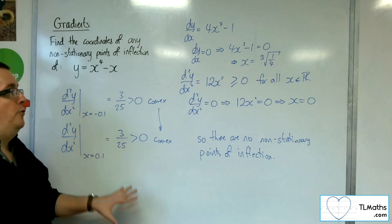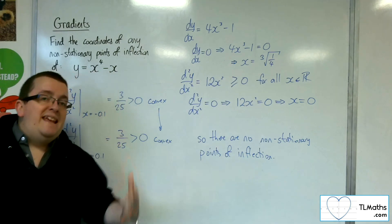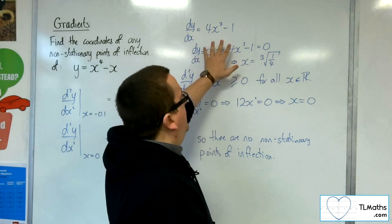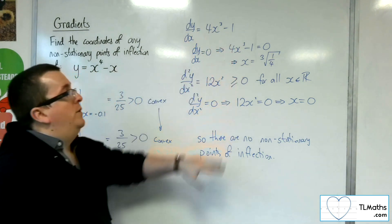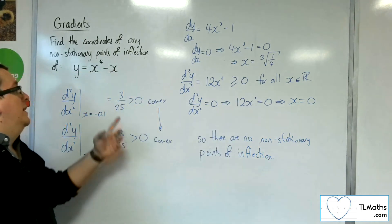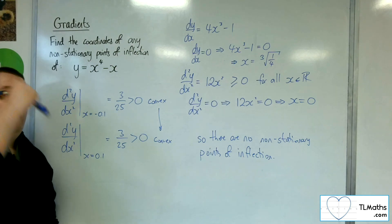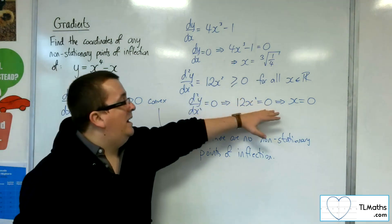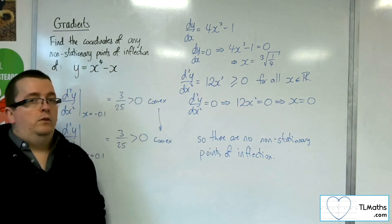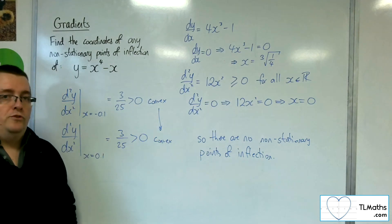This is a very useful example to identify that these checks that we are doing need to be put in place. We need to check where the stationary points are to check that this isn't one of them, and we also need to check that the second derivative changes sign either side. If you don't have that, if you just did that process, you would be fooled into thinking that x is 0 is actually a non-stationary point of inflection, if you don't do this important check.